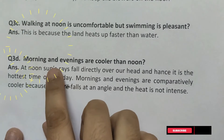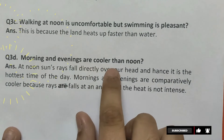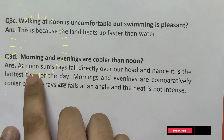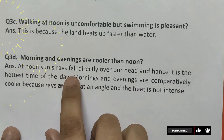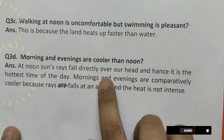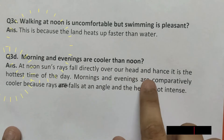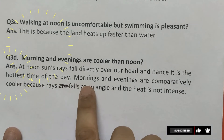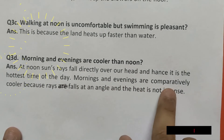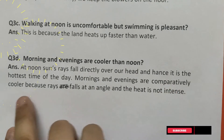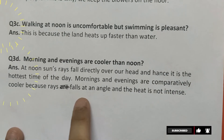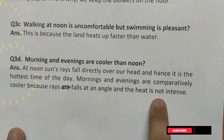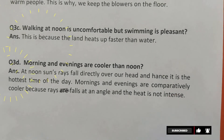Question 3D. Mornings and evenings are cooler than noons. Answer: At noon, sun's rays fall directly over our head and hence it is the hottest time of the day. Mornings and evenings are comparatively cooler because rays fall at an angle and the heat is not intense.